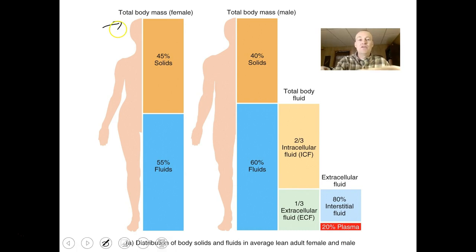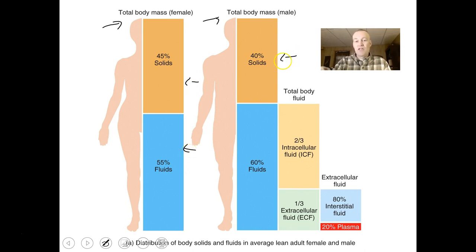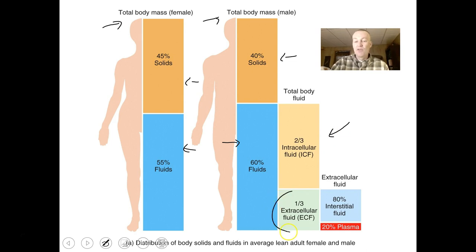Just to look at this graphically, we have a lean female and a lean male. Females and males differ a little in their amounts of fluids and solids: females are about 45% solids and 55% fluids; males are about 40% solids and 60% fluids. For an average lean adult male, two-thirds of that 60% of fluids is intracellular fluid, and one-third is extracellular fluid — 80% interstitial fluid and 20% plasma.